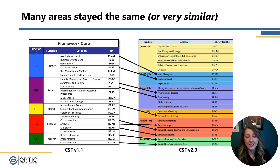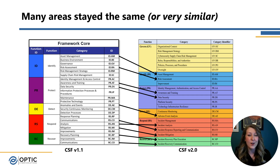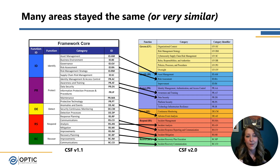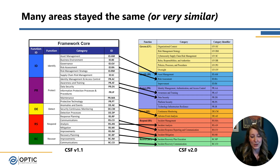I wanted to highlight that a lot of things did stay the same. There are a lot of nuances and tweaks to wording to provide clarity, based on feedback about wording being confusing or the community wanting additional guidance on what the categories and subcategories are asking for. But largely there are still a lot of things that stayed the same — we've still got asset management in the new version, we've still got risk assessment, awareness and training, data security, and a lot of those core things that we know need to be part of a good cybersecurity program.